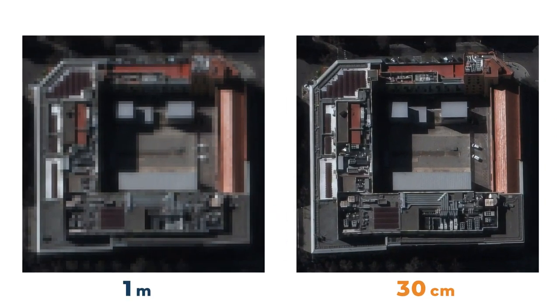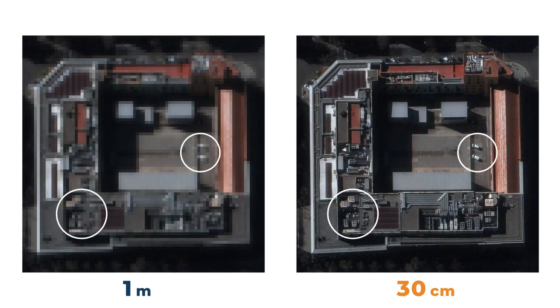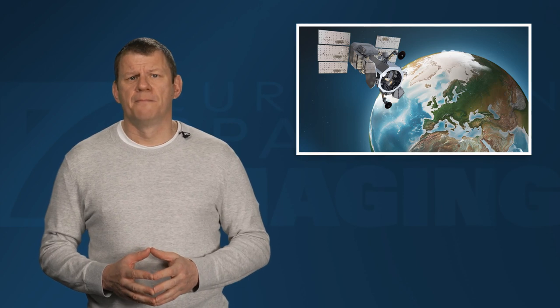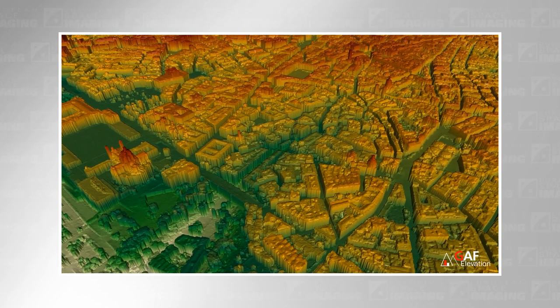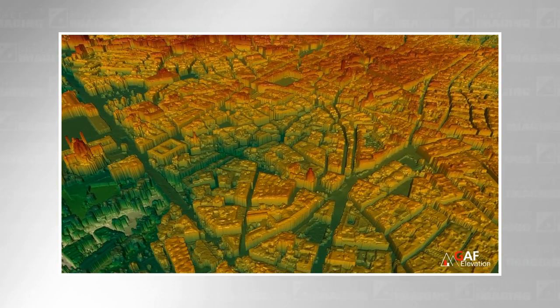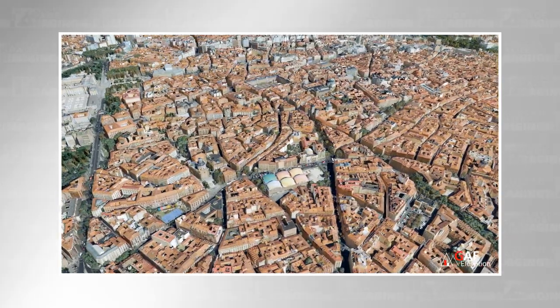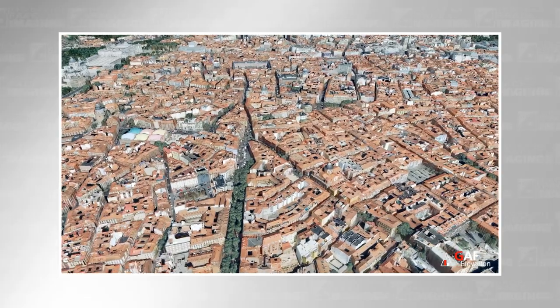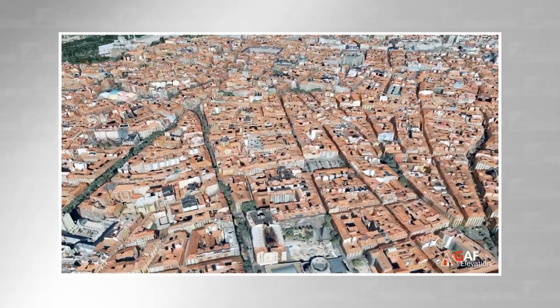A 30 centimeter resolution image from the WorldView-3 satellite will allow for significantly better pointing accuracy and precise measurements than a one meter resolution alternative. Our earth isn't flat, the terrain that covers it isn't smooth, and satellites are very rarely pointing straight down. All these factors will affect the accuracy of the images collected. Ortho rectification is the use of a digital elevation model to correct these inaccuracies, and the measurements you make on a satellite image will only be as good as the quality of this ortho rectification process.